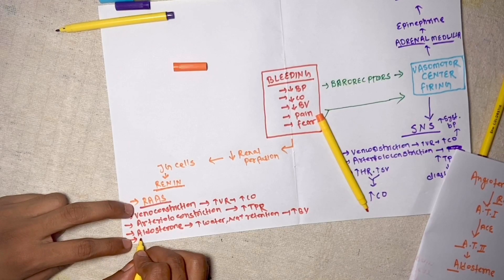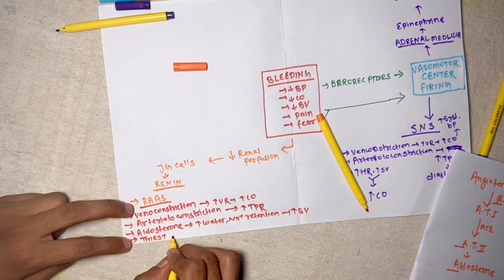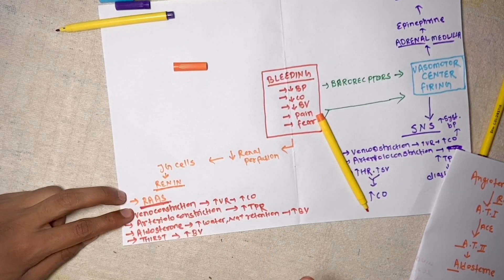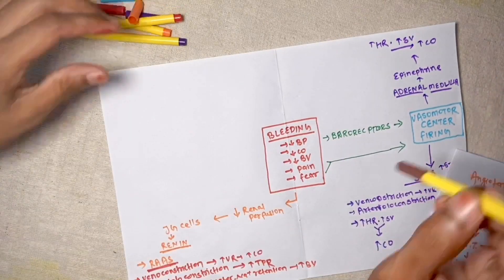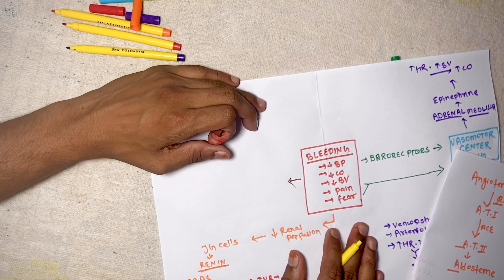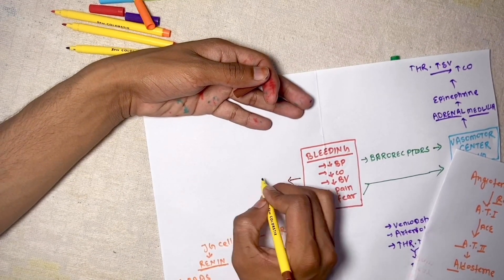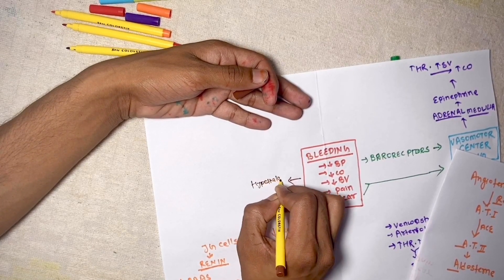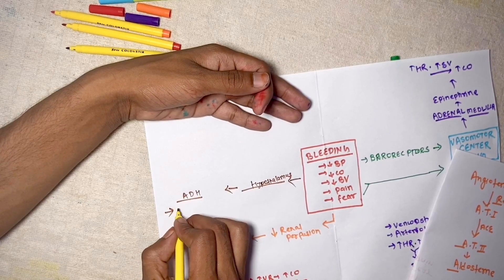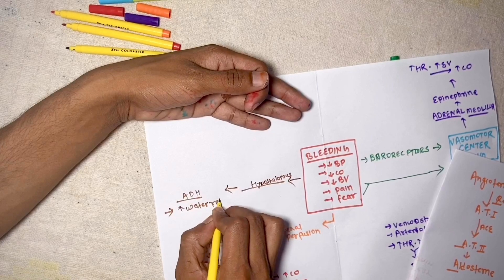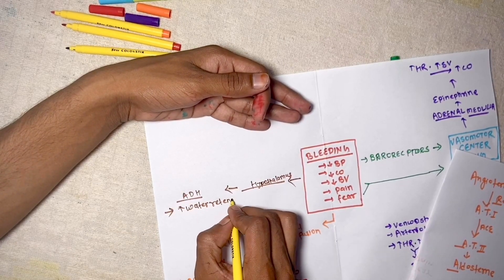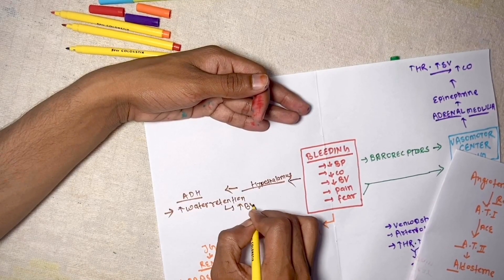Angiotensin 2 also activates our thirst center, so we get thirsty and drink water, which helps increase blood volume. Additionally, due to decreased blood flow and blood pressure sensed by the hypothalamus, it secretes ADH through the posterior pituitary. ADH increases water retention by bringing aquaporin-2 channels to the luminal surface of cells, increasing water retention and blood volume.